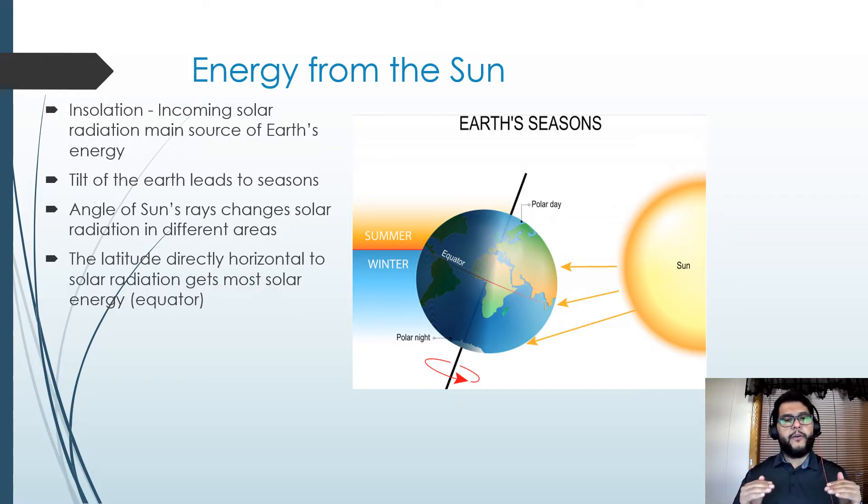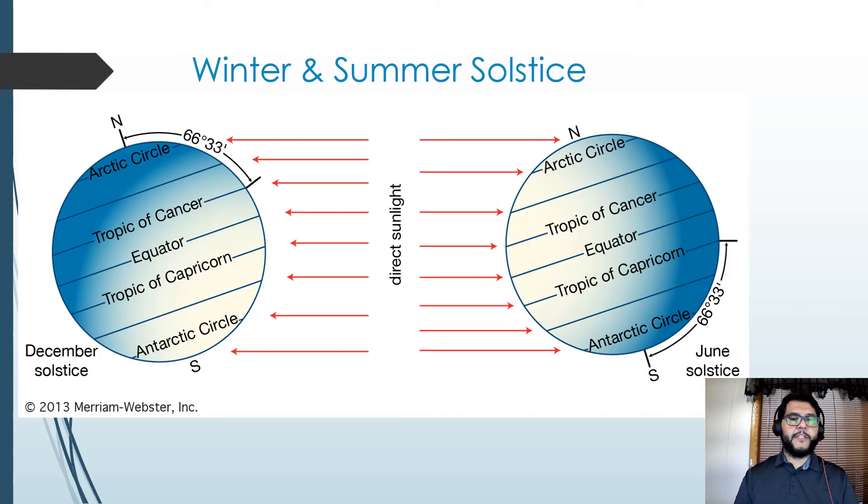So the equator is a line of latitude, and then that goes up. Other two famous ones would be Tropic of Cancer and Tropic of Capricorn. And so as you move north or south from that equator, you're going to get different amounts of insolation, and that's going to lead to different effects. So here we have one example of this.